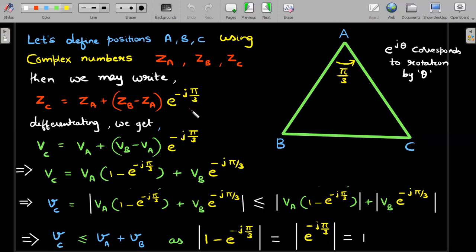Differentiating this position vector in complex form, you will get the complex form of velocities. So vC will become the same thing with z replaced with capital V. Here capital V represents the complex form of velocities. When you rearrange for vA and vB, you end up getting vA and vB with factors of this kind.